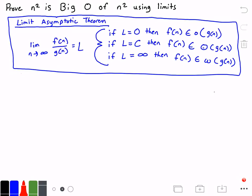Hello everyone and welcome to this video on algorithm analysis. In this video we want to prove that N squared is Big O of N squared using limits.